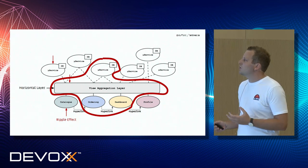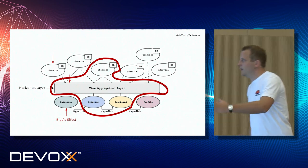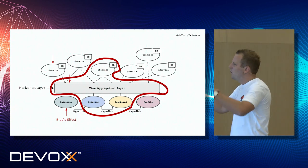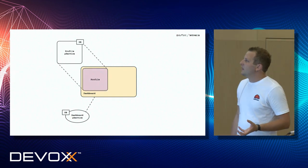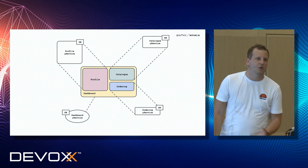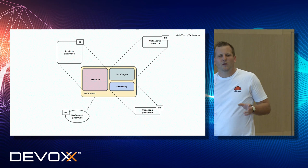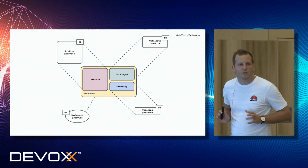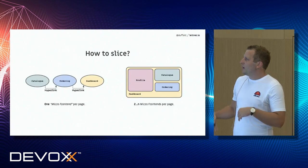If we take a step back, what would we actually like to see? Maybe a dashboard service that returns a dashboard — and within it, a profile service returning a profile, a catalog service returning a catalog, and an ordering service returning an ordering. Full end-to-end verticalization. There was a talk from Martin Fowler, around 2014-2015, where he already said a microservice should bring its own UI — a microservice should ship its own UI.